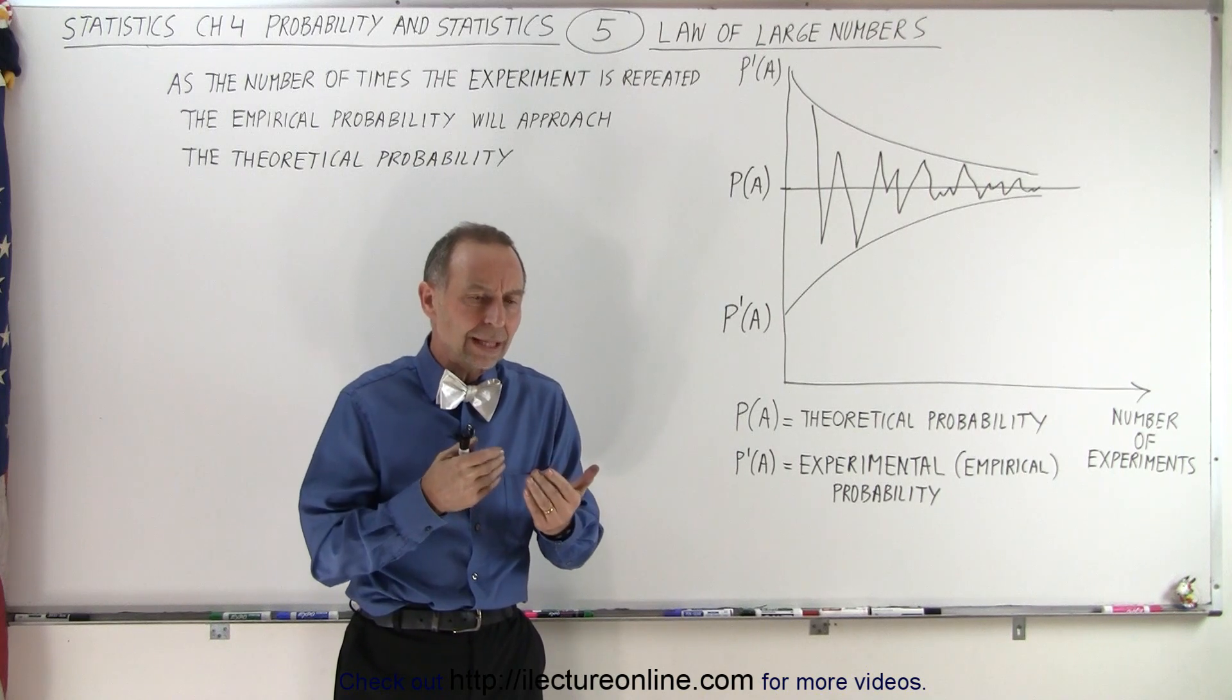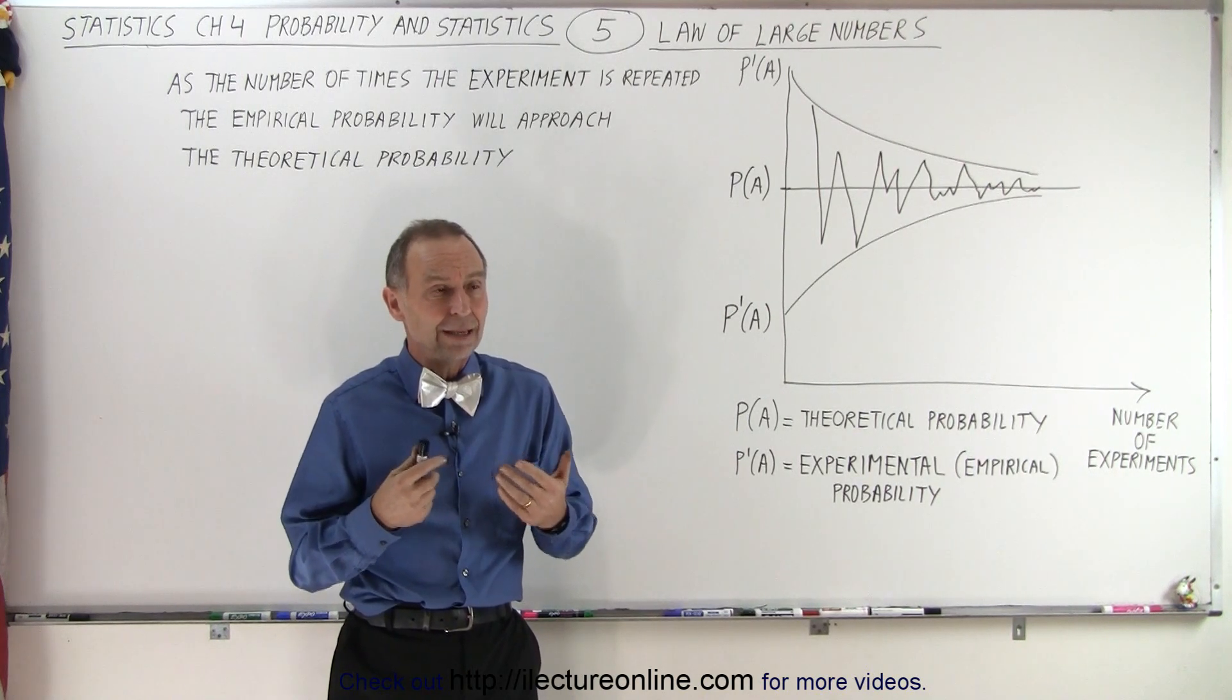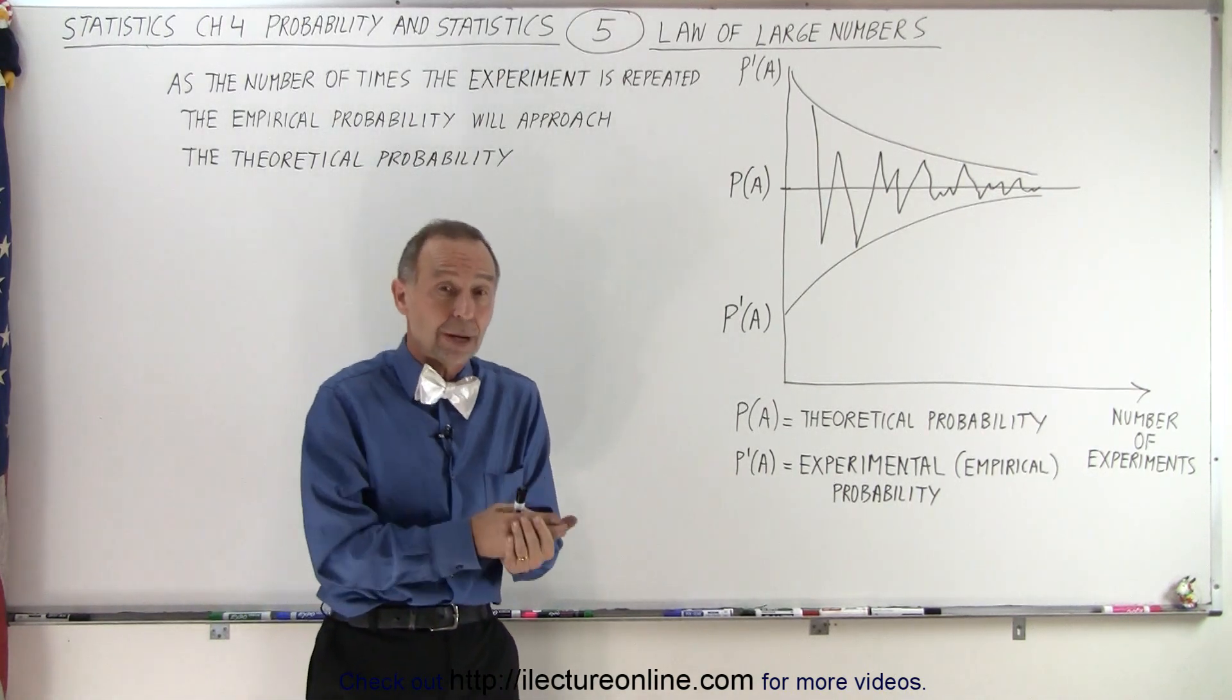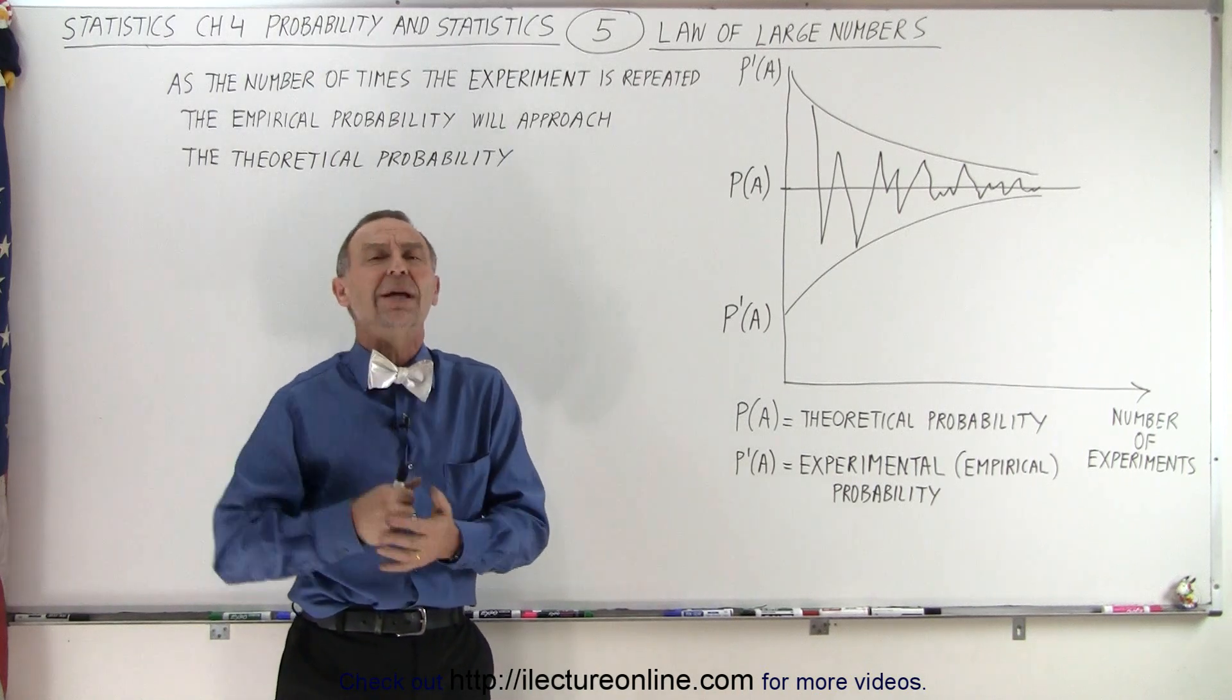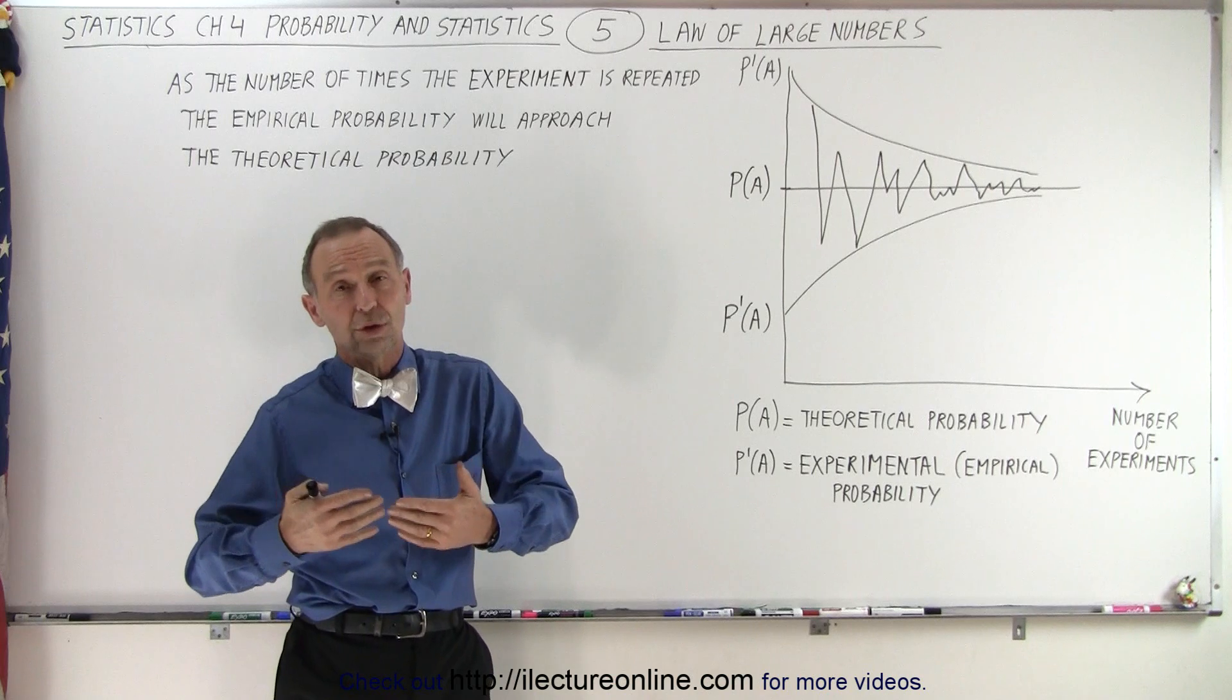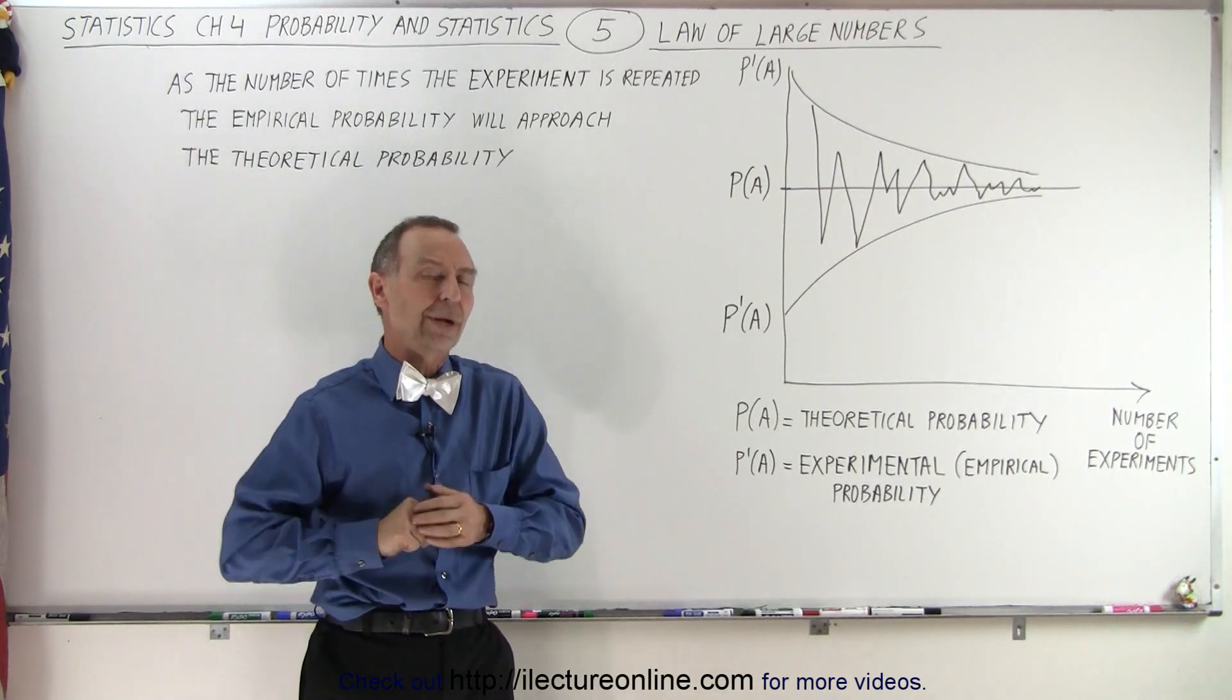And so what we probably want to be able to do in the future is say, if I want to get within 5% or 10% or 2% or 1% of the theoretical probability, how many times do I need to repeat the experiment so that the empirical or experimental probability will be that close to the theoretical probability.